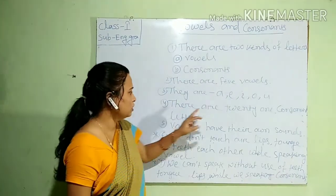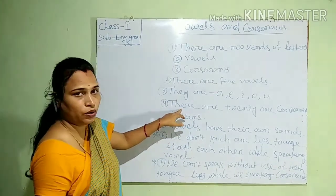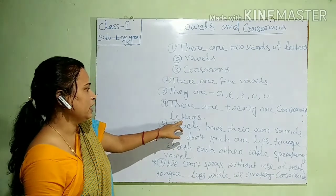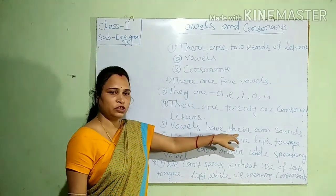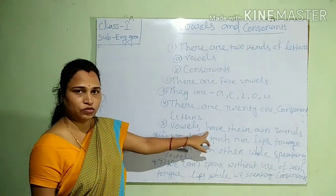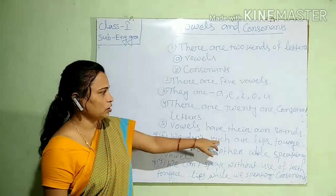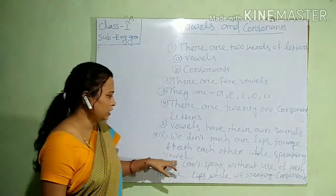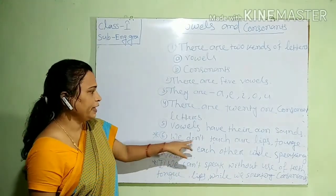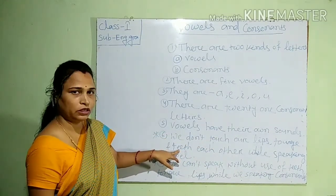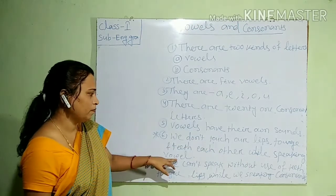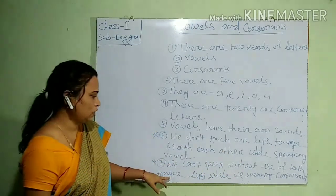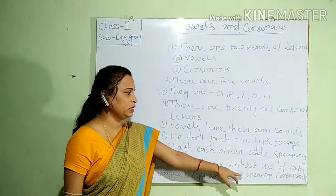Then how many consonants? There are twenty-one consonant letters. Then vowels have their own sound. When speaking vowels, we don't touch our lips, tongue and teeth together. And we cannot speak consonants without the use of teeth, tongue and lips.